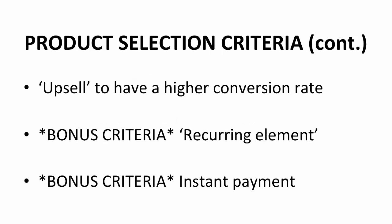The concept of upsell, to put it simply, is like an extra offer. For example, when you go to McDonald's and you order a small set, the cashier will ask you, 'Would you like the medium size instead?' This allows McDonald's to increase their revenue. If the vendor provides an upsell, it's good for you as well, because you'll be able to gain more commission. A bonus criterion would be a commission that has a recurring element — it means that the vendor will commission you monthly.